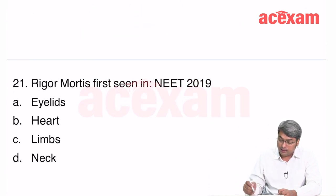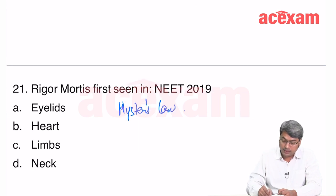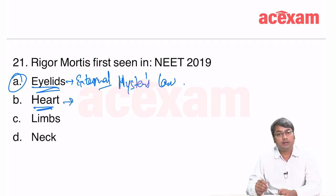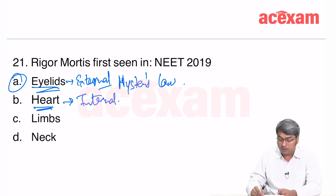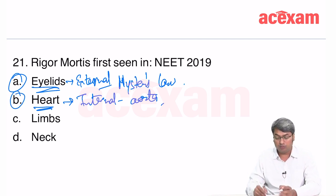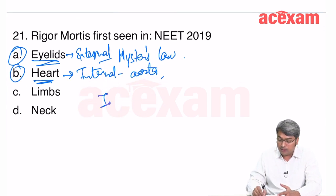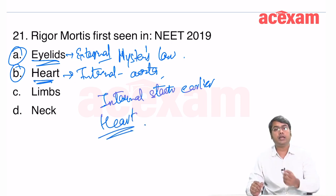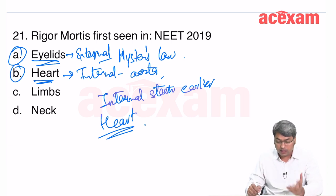Rigor mortis is first seen — asked in NEET 2019 — externally in the eyelids, but internally it starts with the heart (walls of aorta/intima). Internal rigor mortis starts earlier than external. So the answer is heart. Internally, the intima of the aorta shows the first rigor mortis changes.